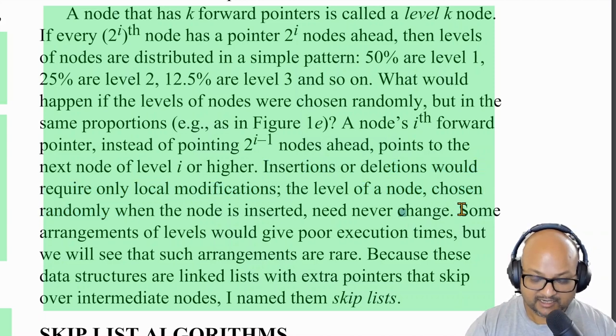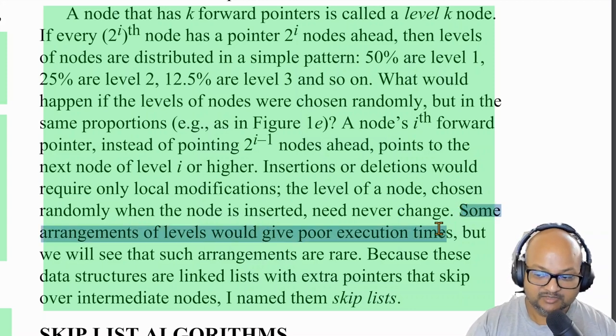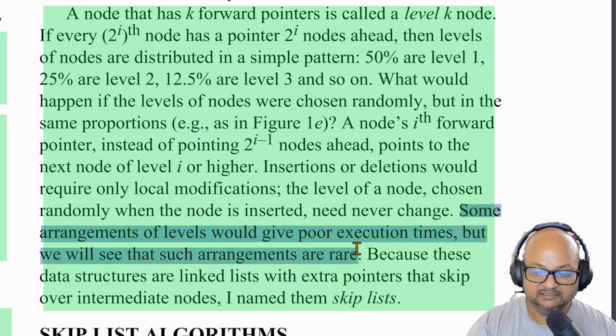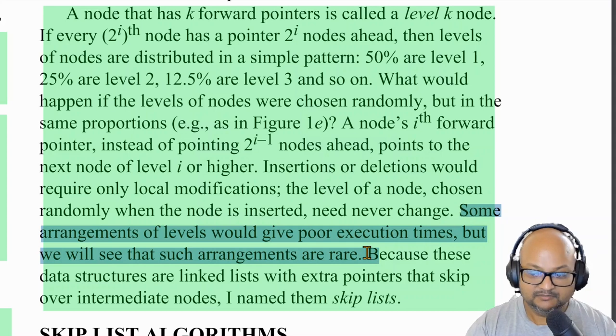Now of course anytime you're using randomness and probability in a data structure, there is always the possibility of some pathological input or sequence making it such that your lookup times become slow. But they show that the likelihood of that happening is tiny enough that it should not matter in practice.